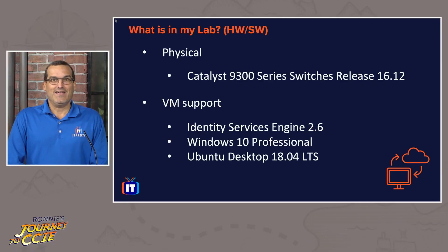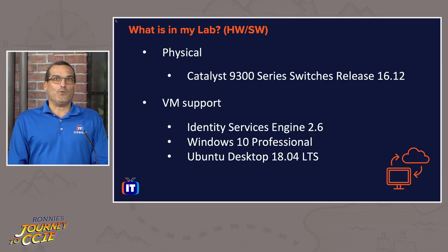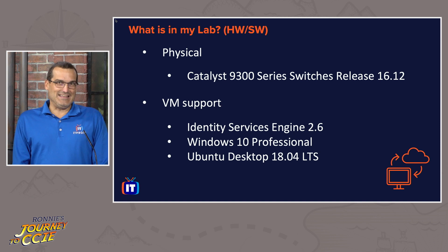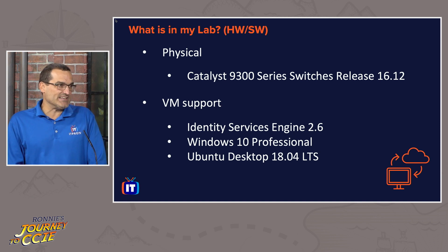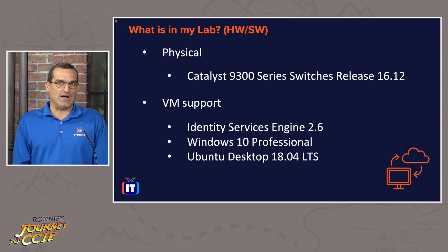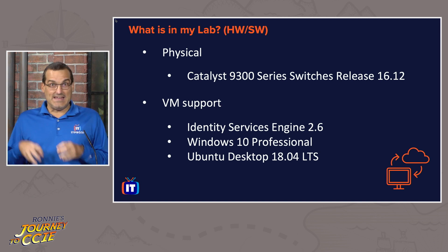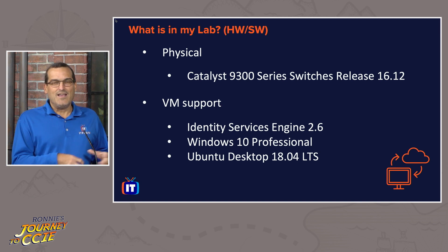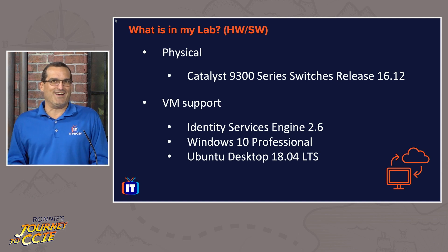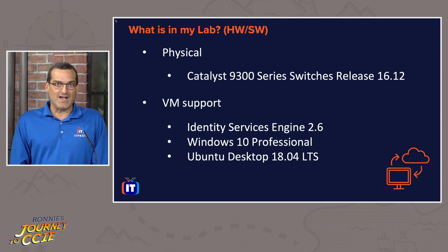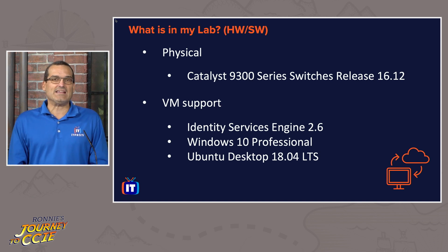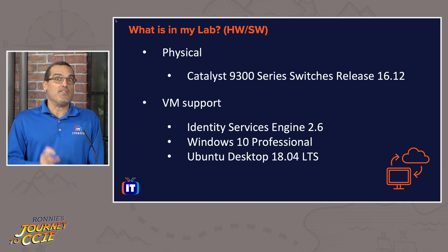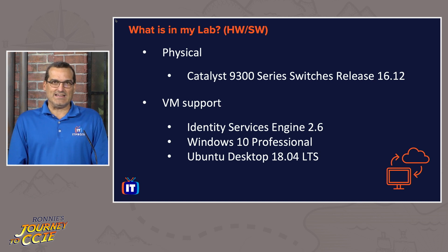Any physical devices? Well, there is. The CAT 9300 series is in there physically running 16.12. There's the CAT 9K inside of CML, but it's a real generic version of the 9K code. Clearly there were things at layer two. I would be willing to bet that Cisco doesn't know how they're going to virtualize in CML yet. So there is a CAT 9300 physically that's accessible to Ronnie in the lab exam.